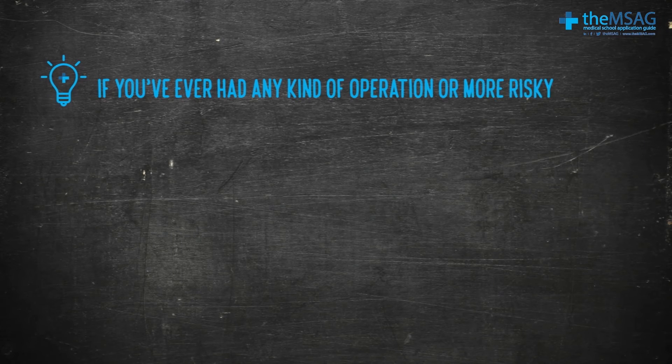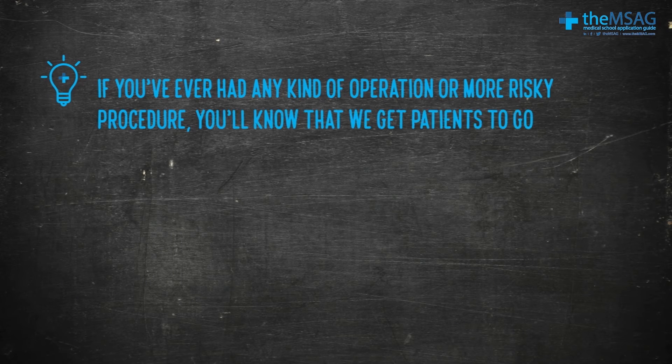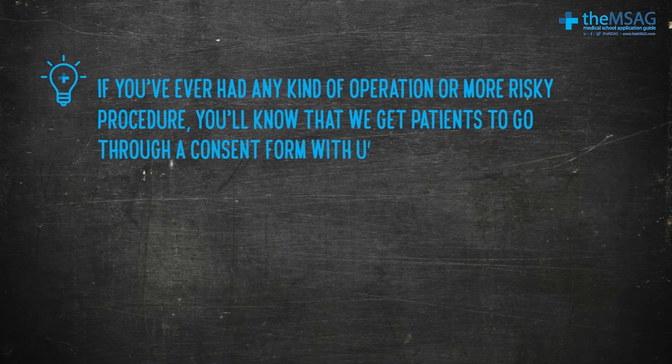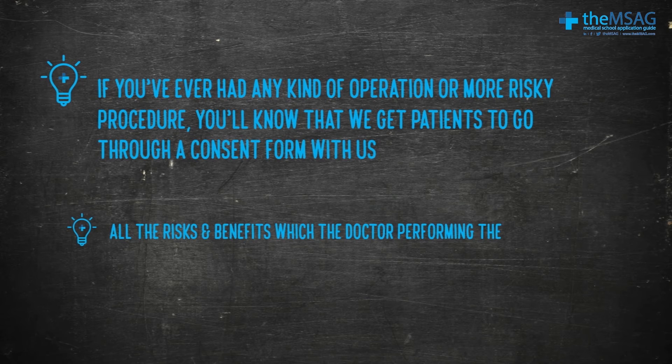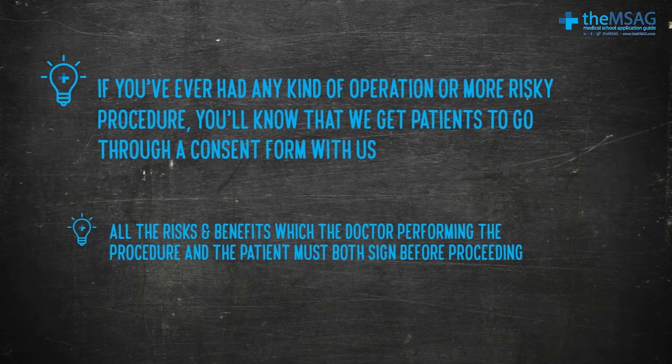Finally, if you've ever had any kind of operation or more risky procedure, you'll know that we get patients to go through a consent form. This outlines all the risks and benefits which the doctor and the patient must both sign before proceeding. The final thing to know about consent is that there are three specific things needed for it to be valid: three C's, three different types of consent, and three necessities of consent.